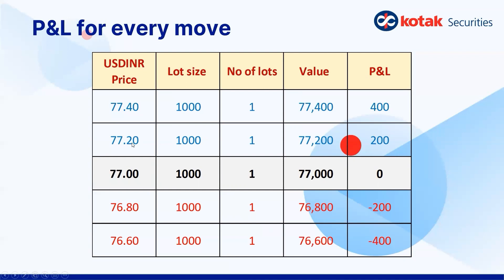Scenario one — price moves in his favor: prices go to 77.20, meaning the USD strengthened against the INR. The contract value rises from 77,000 to 77,200, giving him a profit of 200 rupees. Another positive tick and prices move further — he has made 400 rupees in total. Scenario two — prices move against him: prices fall to 76.80, and he has lost 200 rupees. Another negative tick brings prices to 76.60, and he has lost 400 rupees. So a 20 paisa move either way results in a 200-rupee gain or loss per lot.